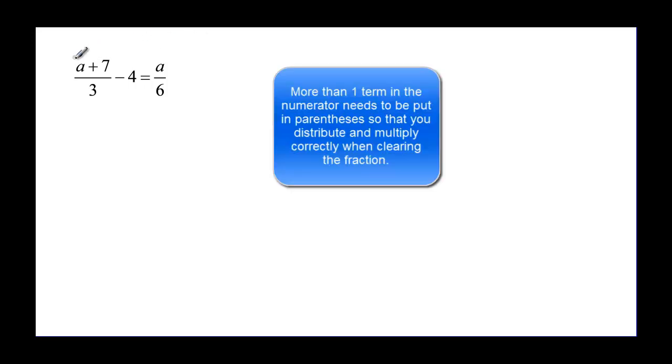One more. This one is really important to watch and be very careful. When you see more than one term in a numerator like this, you want to put parentheses around it before you do anything else, so you don't forget to multiply correctly. Now we are ready to look for the least common denominator. Again, I have a 3 and a 6, and I can multiply 3 by 2 and get to 6. So 6 will be the least common denominator.